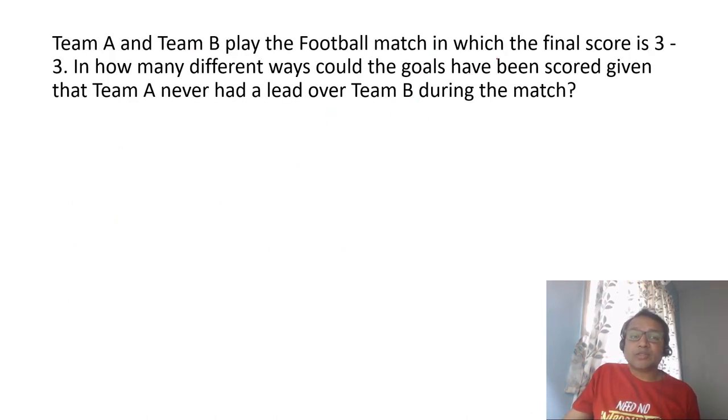Team A and B play a football match with a score of 3-3. In how many different ways could the goals have been scored given team A never had a lead over team B during the match? This has to be done very systematically. If team A never had a lead over team B, that means the first goal has to be scored by B. Now when you look at the second goal, it can be scored by A or B. There are two cases possible.